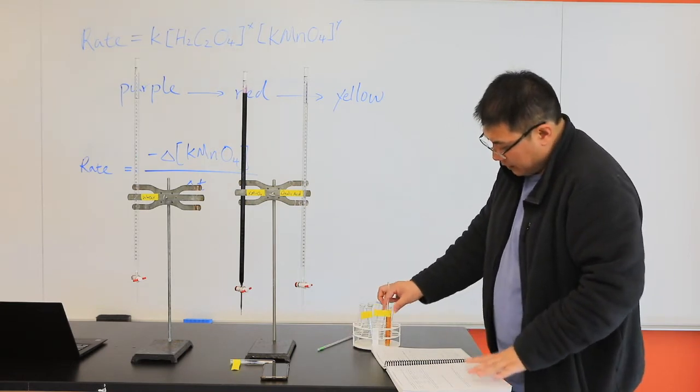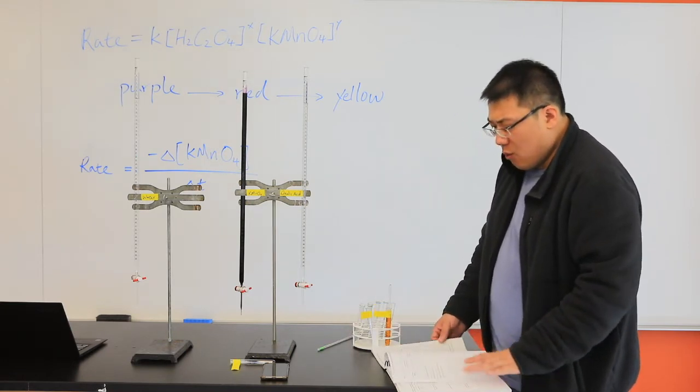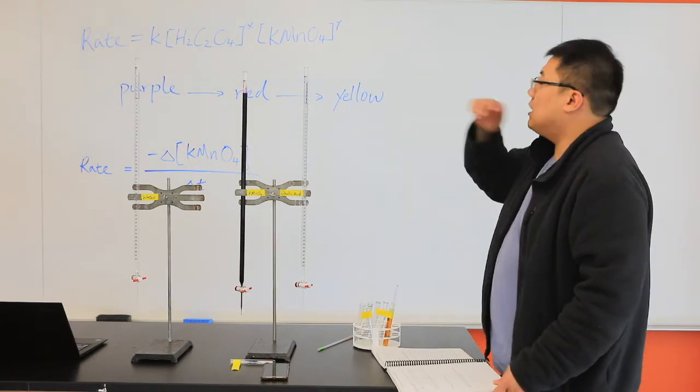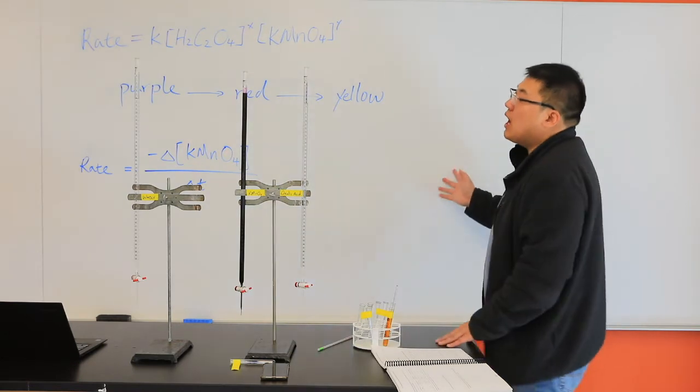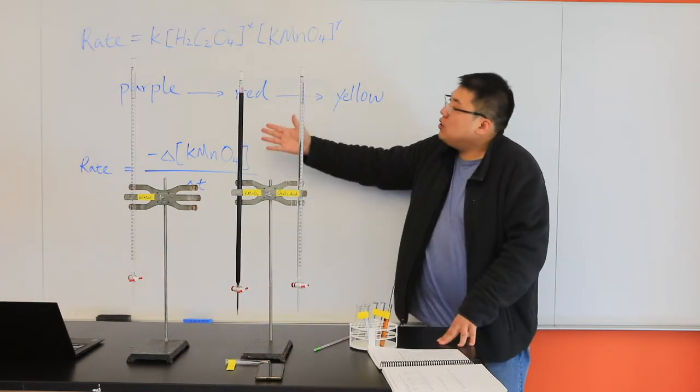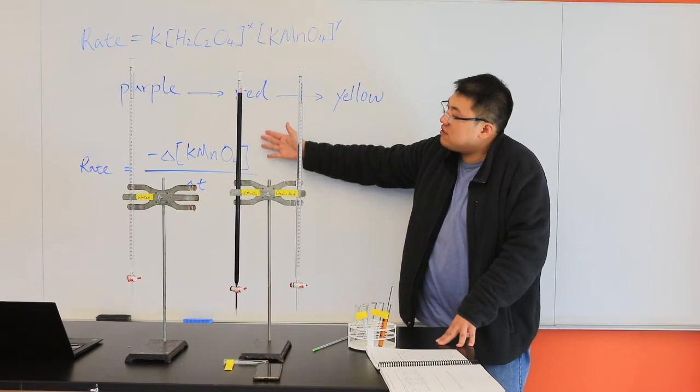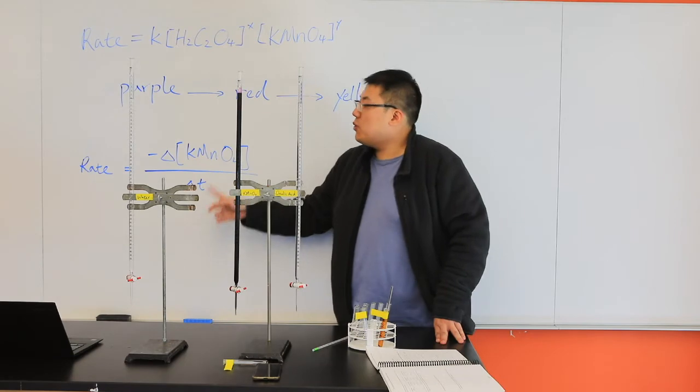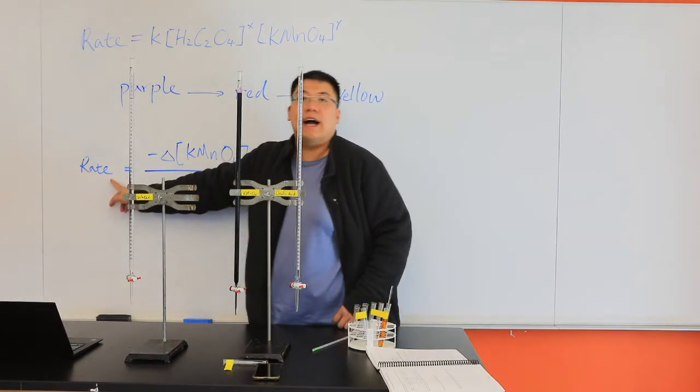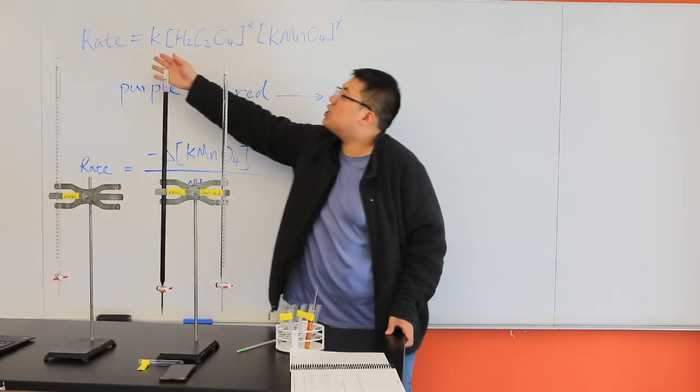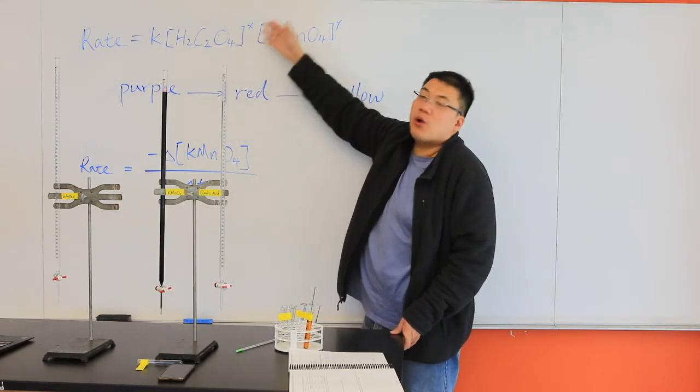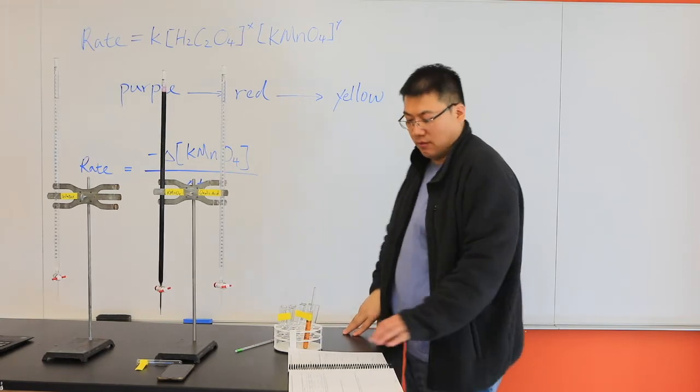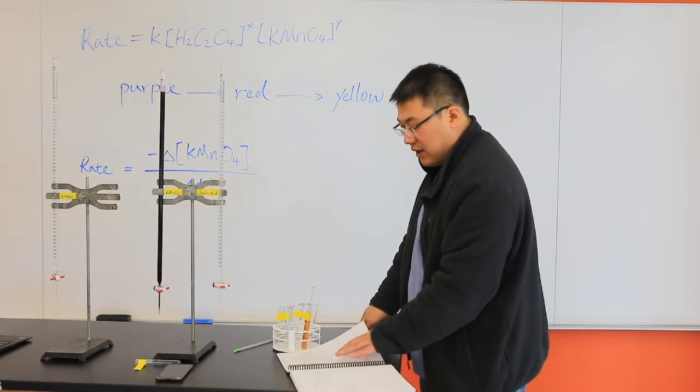Once you have determined the time for this reaction to take place, then you can calculate from knowing the concentration of potassium permanganate. This is the change of the concentration. Divide by how much amount of time, so you can get the rate of a reaction. From the rate of reaction, you can solve for your x and y's, and then you can determine the reaction order. This is the first part of the experiment.